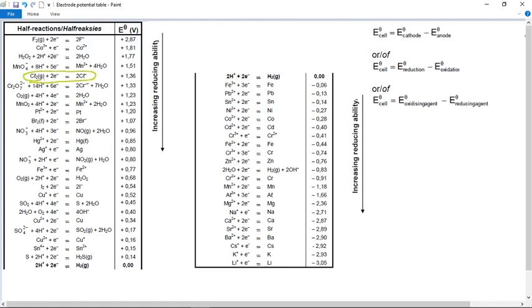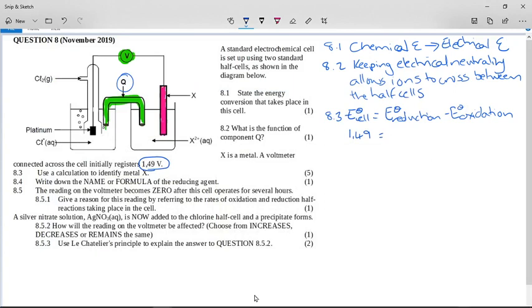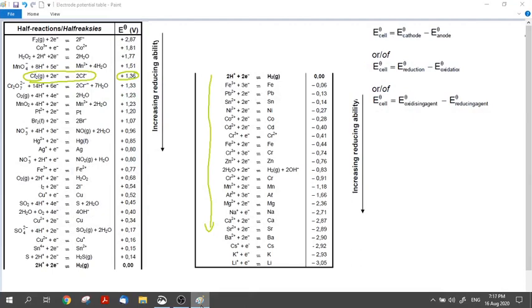Here is the chlorine half reaction and here is its cell potential. There is absolutely nothing that is more likely to be reduced than the chlorine, so this has got to be the reduction reaction. Remember oxidation is loss of electrons and reduction is gain. All the metals are way down here in the second half of the table, so the chlorine has to be the reduction reaction.